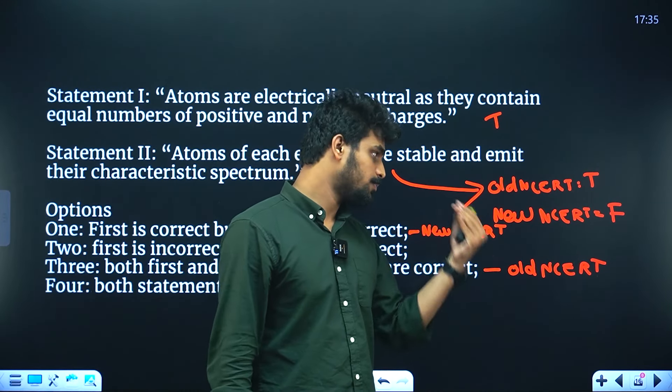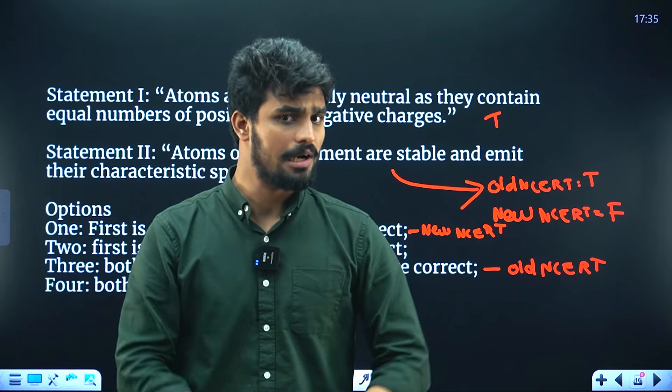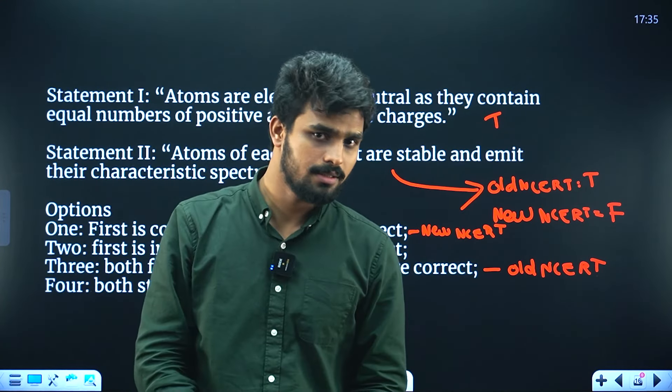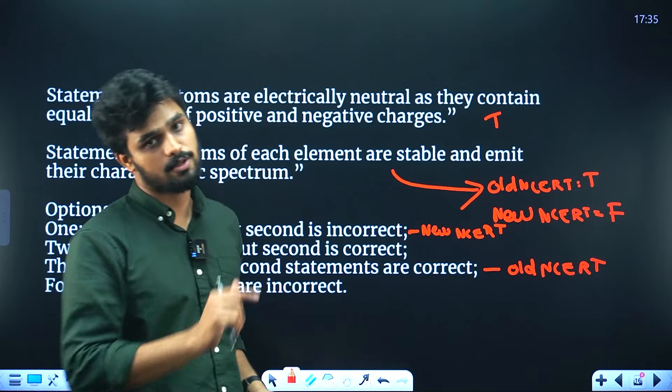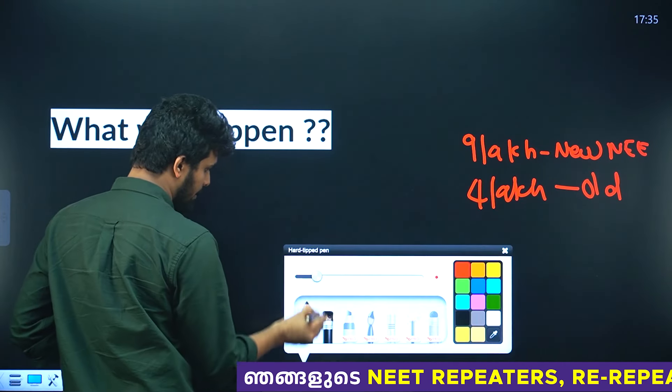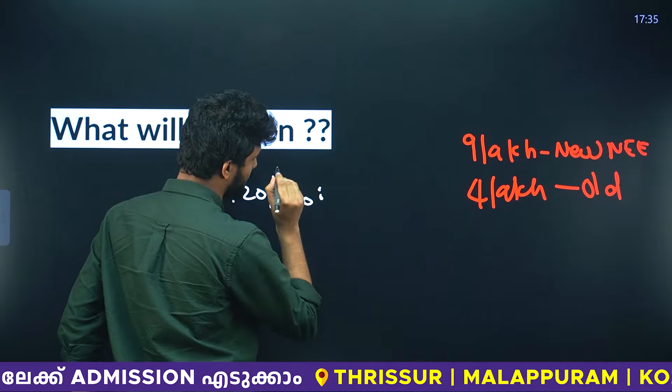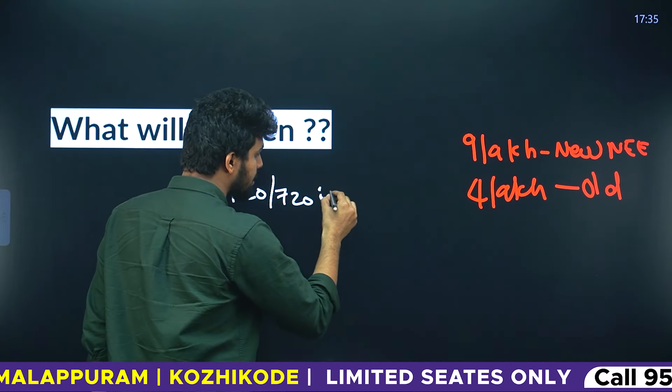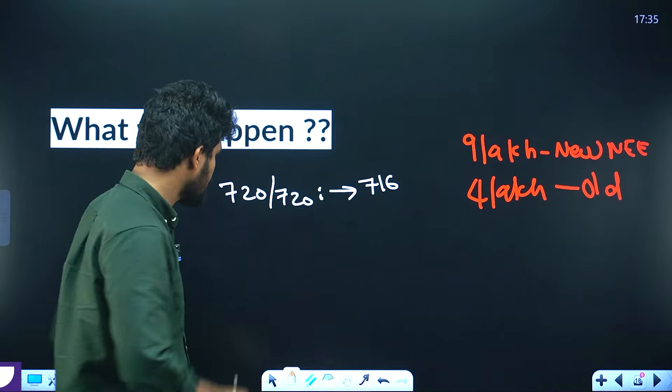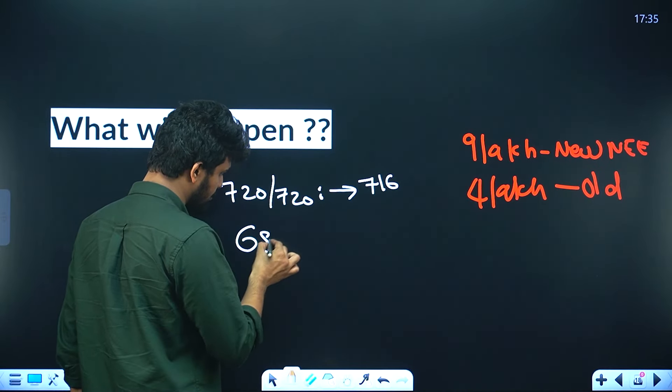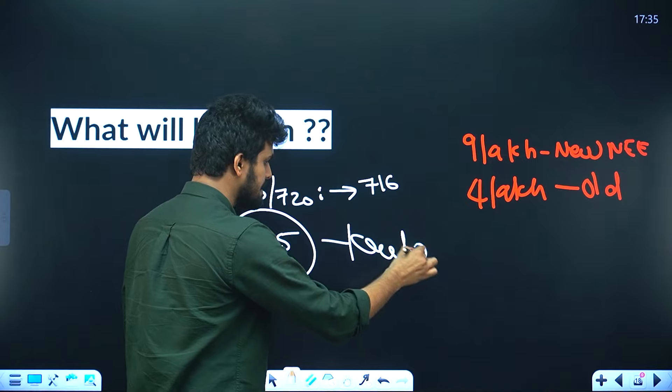Now, if there's any problem with the rules or the old NCERT textbook, we must decide. For example, helium-2. So what is the situation? If you answered according to old NCERT, the score is 716. This is the best possibility. But for some it's 685 marks.